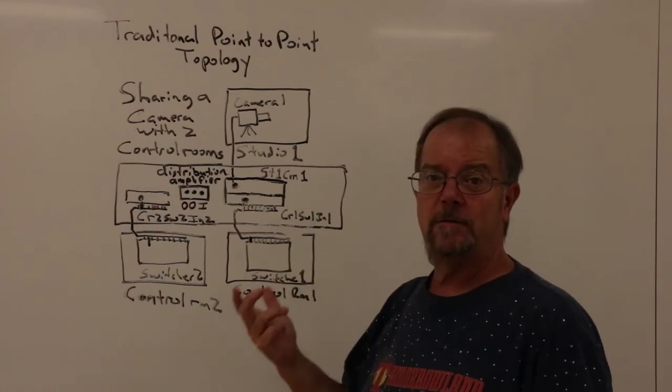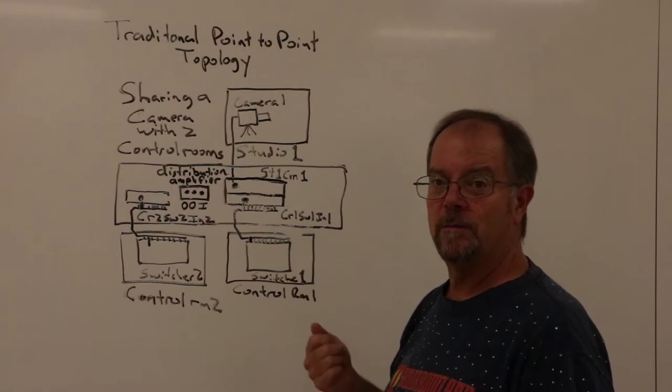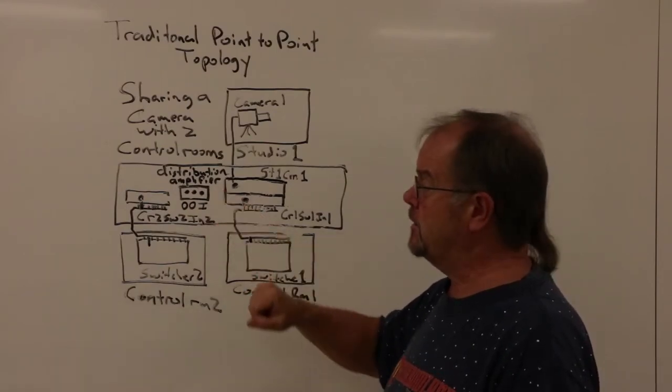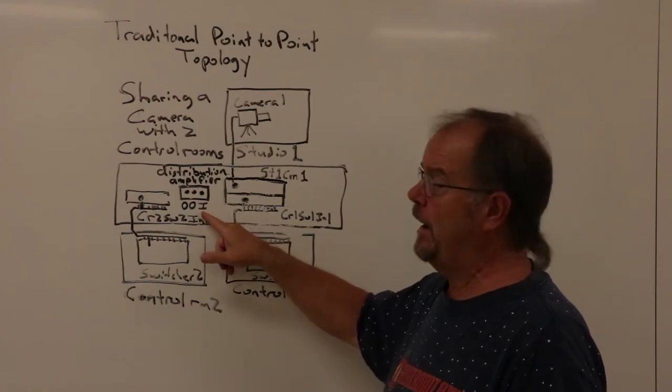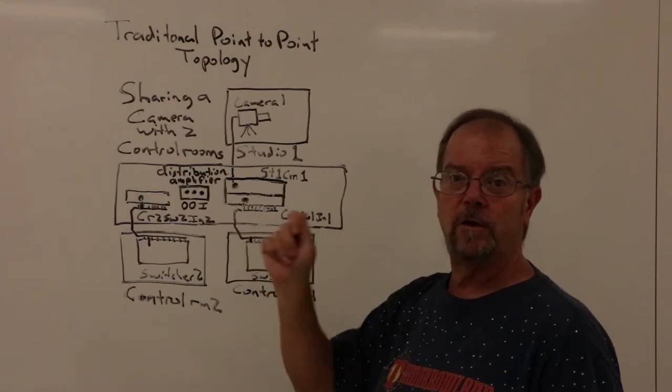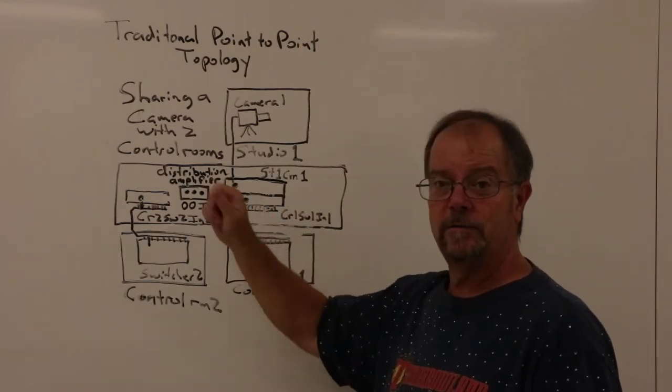If you actually want to be able to use the camera in both studios, you have to add a piece of equipment to the patch panel, what's called a distribution amplifier. The distribution amplifier takes an input, amplifies it, and redirects it to a series of outputs that you can plug different devices into.